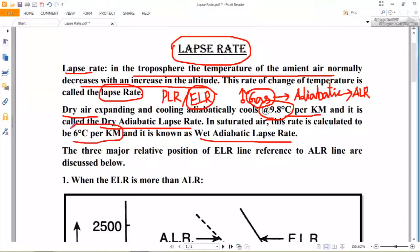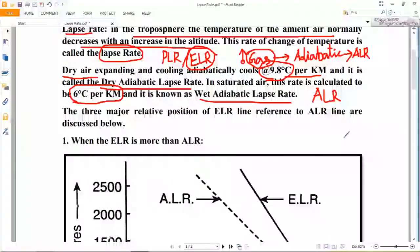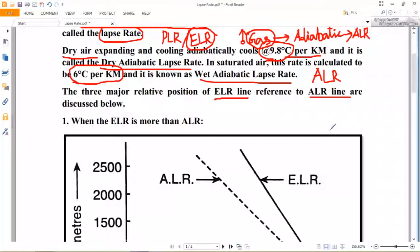Since the rising parcel of emitted smokes will neither be fully dry nor fully saturated, the actual adiabatic lapse rate (ALR) representing cooling of the emitted smokes will be somewhere between the dry adiabatic lapse rate and wet adiabatic lapse rate. Depending upon the relative positions of the two lines—that is, ALR line and ELR line on the graph sheet—the stability of the environment is determined. The three major relative positions of ELR line with reference to ALR line are discussed below.